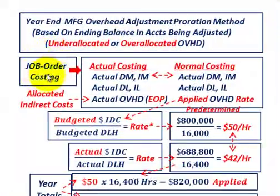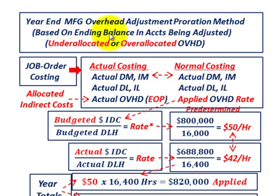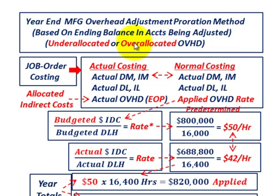What we're going to be going over here is job order costing where we're going to have to make a year-end manufacturing overhead adjustment using the proration method, and it's going to be based on the ending balance in the accounts that are being adjusted for any under-allocated or over-allocated overhead. In this example, we're going to be looking at over-allocated overhead.